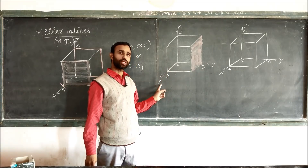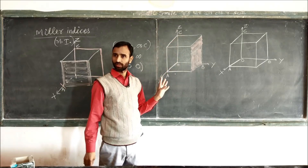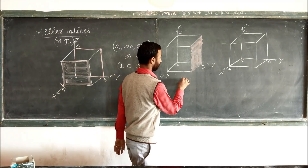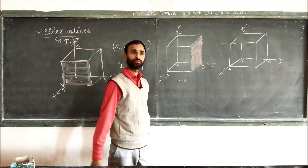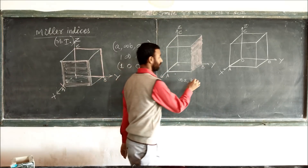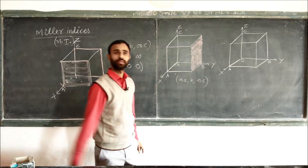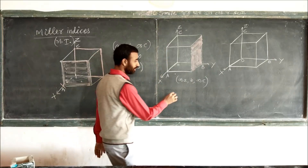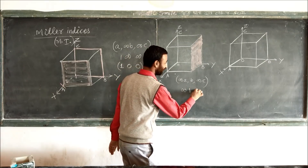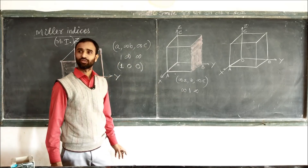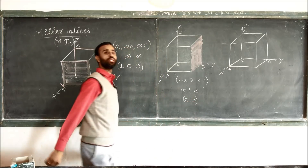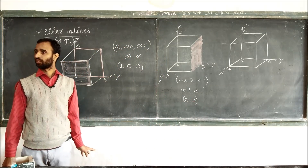The back face is parallel to x and z axes, so its intercepts are infinity·A, B, infinity·A. The Weiss indices are infinity, 1, infinity, giving Miller indices of 0, 1, 0. This is the (0,1,0) plane.